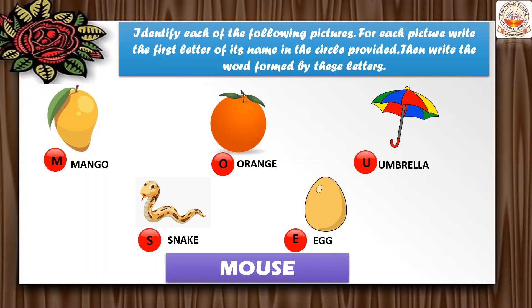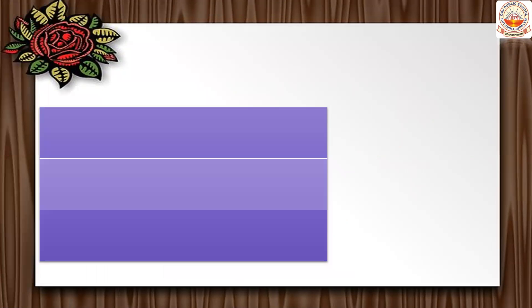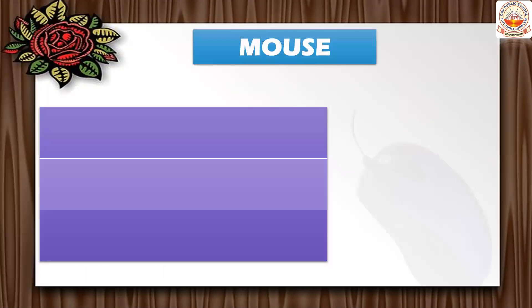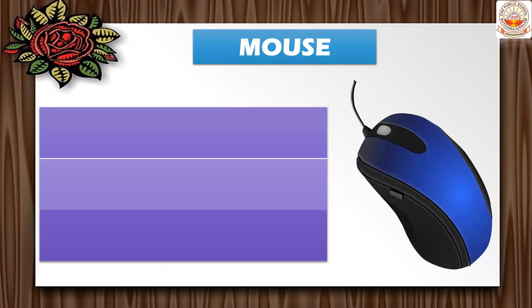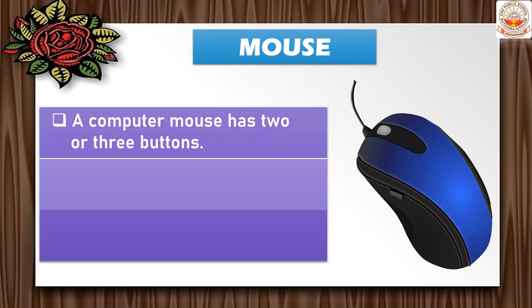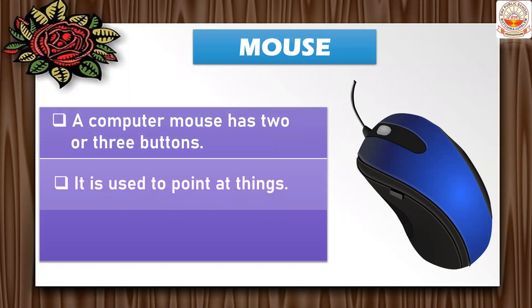M-O-U-S-E — the word is MOUSE. So this is the computer part mouse. The picture shown here is a computer mouse, not a real mouse. A computer mouse has two or three buttons, and it also has a long tail-like wire connected to the CPU.